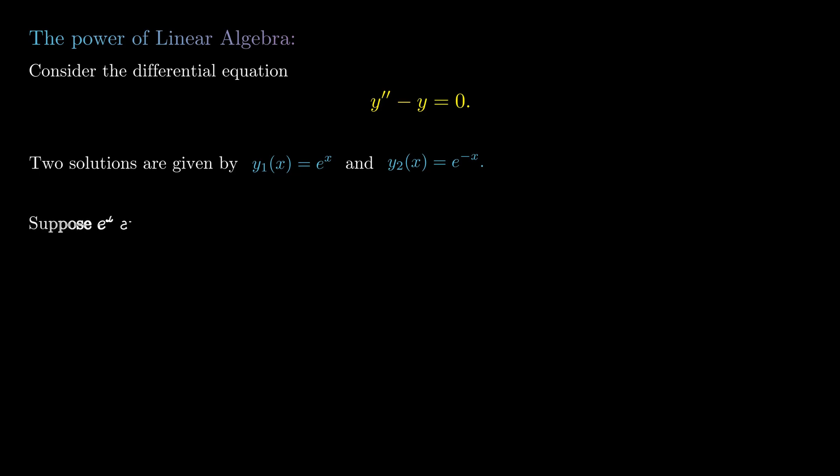Returning to our given linear differential equation y'' - y = 0, let's suppose for the moment that eˣ and e^(-x) are linearly independent. The order of the ODE — the highest number of derivatives appearing — is two. So the order is going to be related to the dimension of the vector space. For us, we have an order-two differential equation, so the vector space will have dimension two.